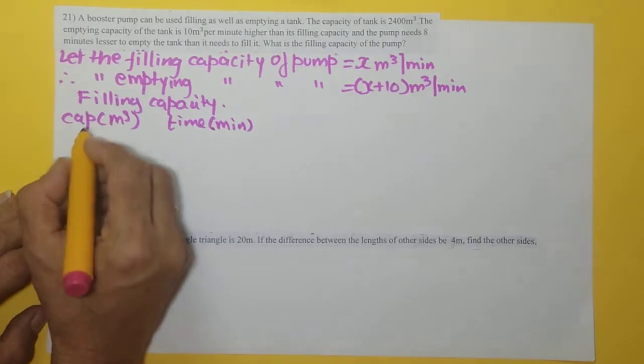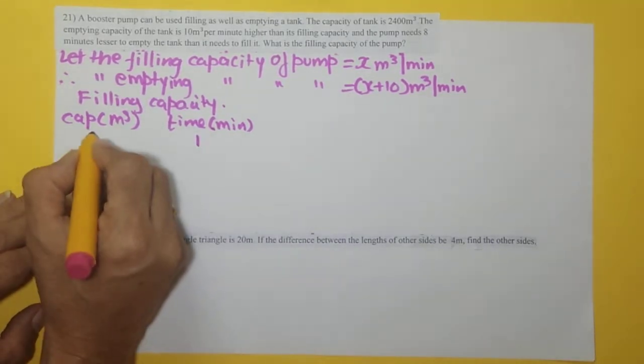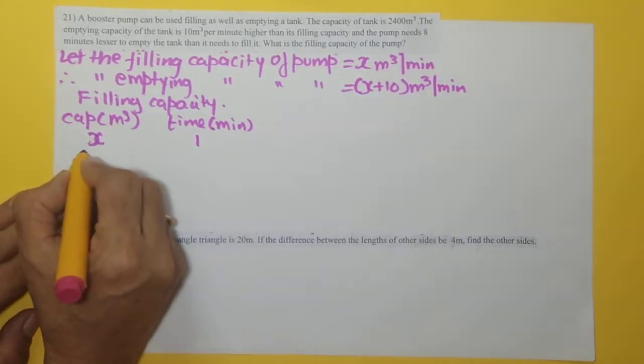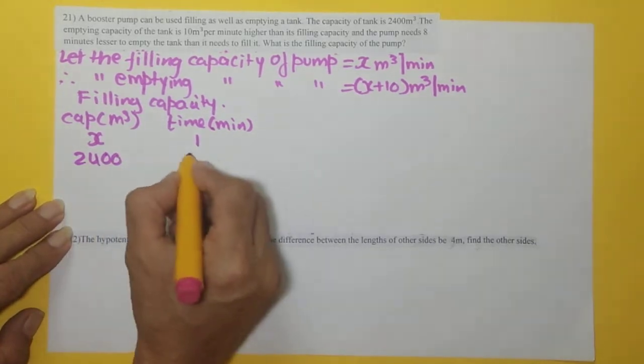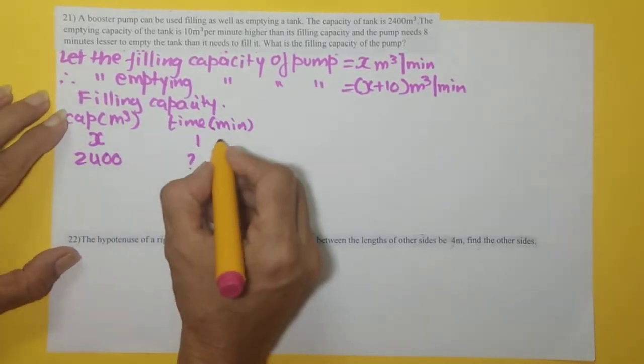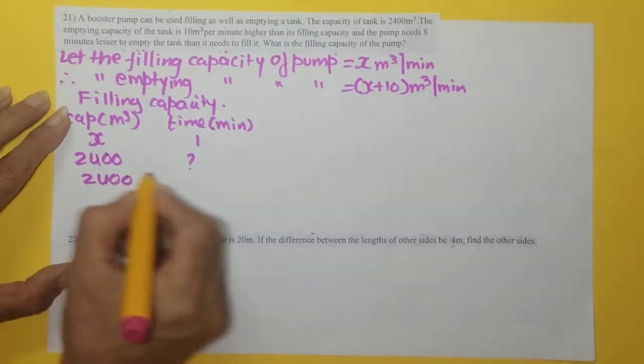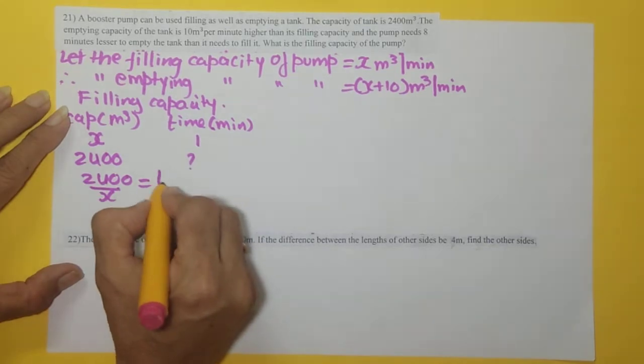Filling capacity, what is it? In one minute, how much is it filling? X meter cube. So total is how much? So this will yield us 2400 upon x. This is our time, T1.